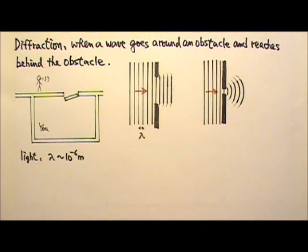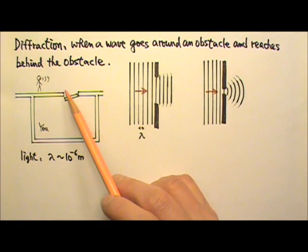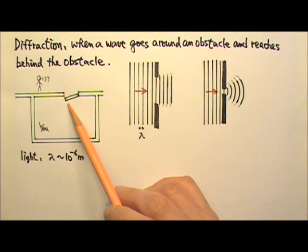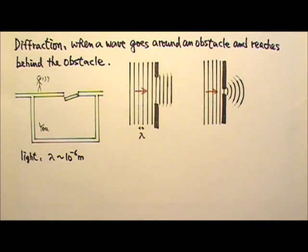For light wave, the wavelength is about 10 to the negative 6 meters, which is way smaller than the size of the door opening. Therefore, there is virtually no diffraction at all.